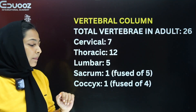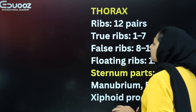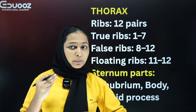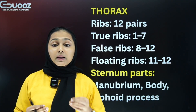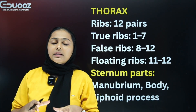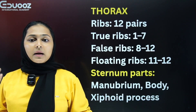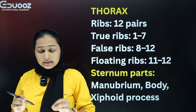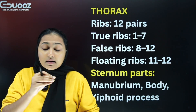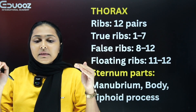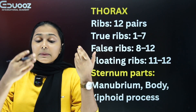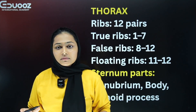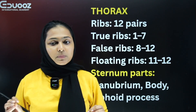The thorax consists of 12 pairs of ribs and the sternum. Ribs 1 to 7 are true ribs — they have direct attachment to the sternum. Ribs 8 to 10 are false ribs with indirect attachment; they attach to the 7th rib cartilage. Ribs 11 and 12 are floating ribs with no anterior attachment.